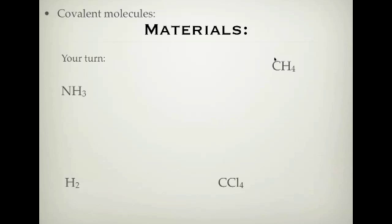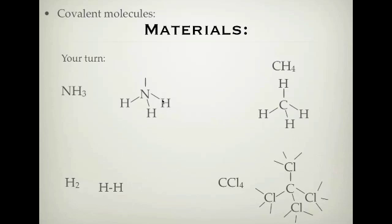Now let's look at how you went with drawing those structures. NH₃ has three bonds to hydrogen and one lone pair. CH₄, methane, has all four of carbon's bonds taken up with one hydrogen each — remember hydrogen only shares one electron so each forms one bond. CCl₄, carbon tetrachloride, has four chlorines around a central carbon with three lone pairs of electrons on each chlorine. If you didn't get them right, try to work out where you went wrong, or send an email or ask your classroom teacher.